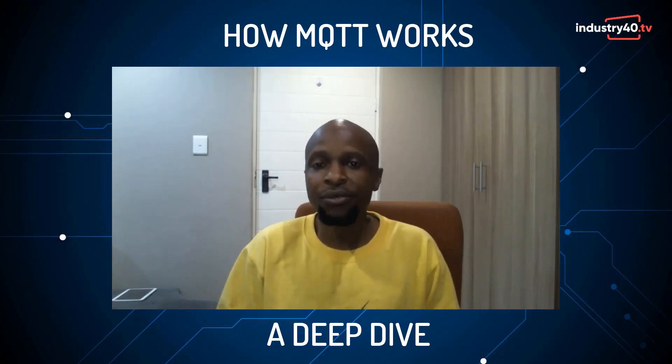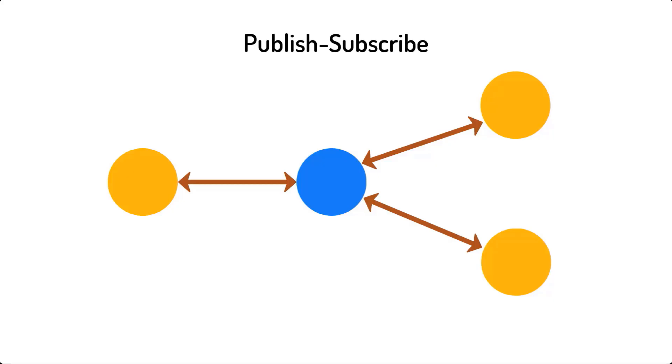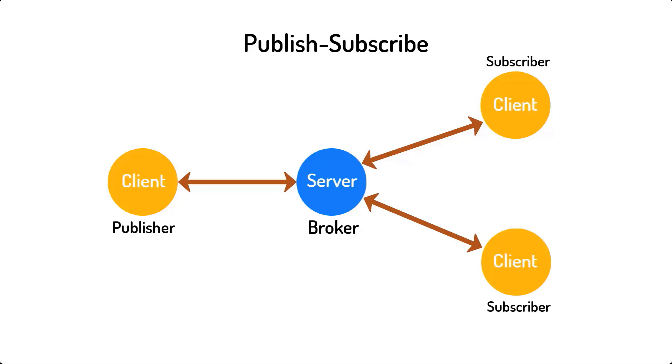In this video, I'm going to describe how MQTT works. I'm Kuzai with Industry40.tv and I regularly publish Internet of Things videos on this channel. MQTT uses a publish-subscribe model of communication whereby a centralized server called a broker manages the delivery of messages to clients connected to a network. To identify the published data, clients use hierarchical topics which can be created on the fly.